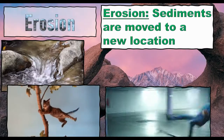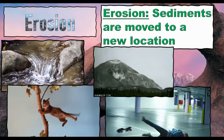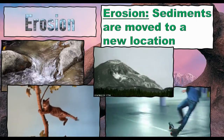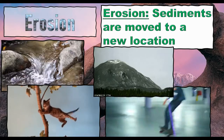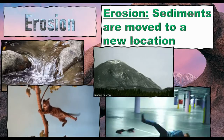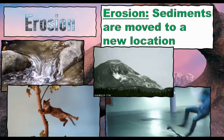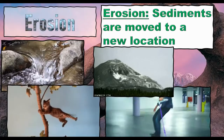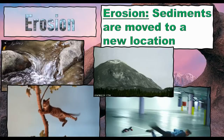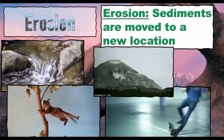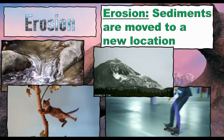If you get a big enough erosional event, you get a landslide. Landslides are like erosion on steroids — erosion gone crazy. But either way, whether you're using water, wind, gravity, or a combination of all three, you end up with sediments in motion.